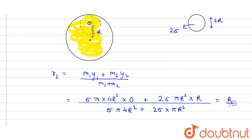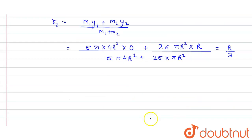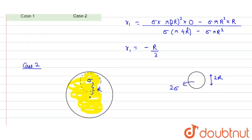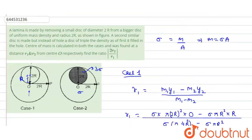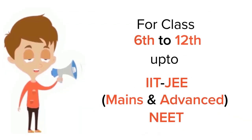Solving this, r2 turns out to be r/3. We need to find 2r2/r1 in magnitude. Since r1 = −r/3 and r2 = r/3, their magnitudes are equal and cancel, giving 2r2/r1 = 2. The correct answer is 2.